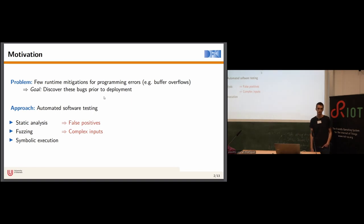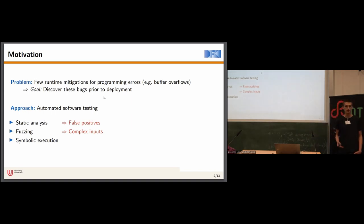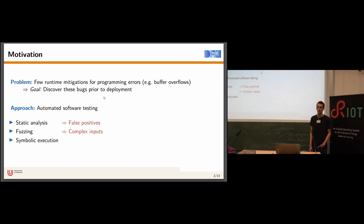For example, if a part of your code is buggy and that buggy code can only be reached with a certain input value, a fuzzer might not be able to generate an input that triggers this buggy code, and you might miss bugs.